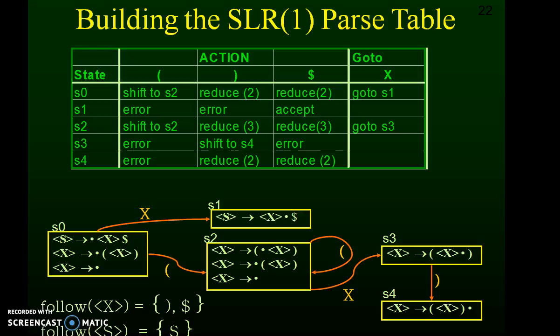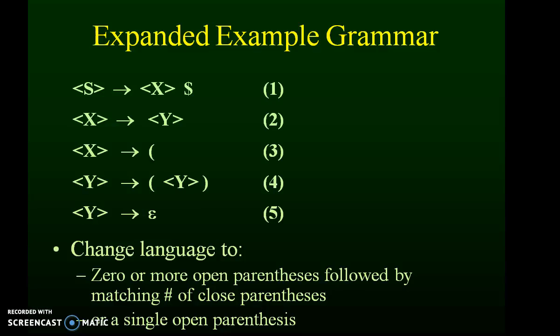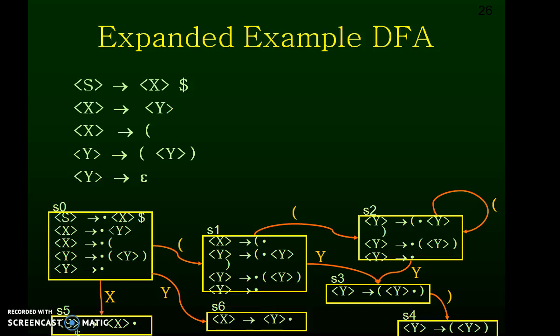This picture shows how we can generate the FOLLOW sets for non-terminals such as capital X and capital S. Capital X may be followed by a close parenthesis, and capital S may be followed by the dollar symbol. The grammar can be expanded as: S derives X (step 1), X derives Y (step 2), X also derives open parenthesis Y close parenthesis, and Y can be epsilon. For the extended grammar, we examine all LR(0) items in each state (starting from S0), reading terminals and non-terminals, and moving the dot one position to the right as each symbol is read.